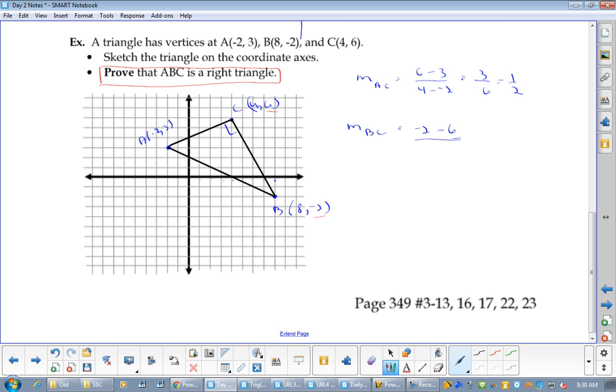And then I got 8 minus 4. What's negative 2 minus 6? Negative 8 over 4 is negative 2. So you would say m of AC is perpendicular to m of BC. It is a right angled triangle.